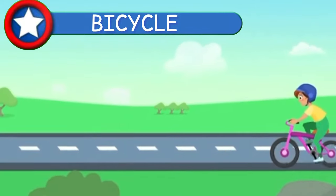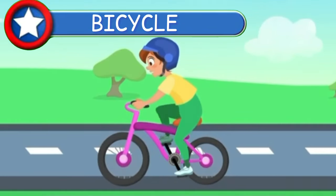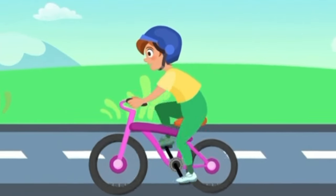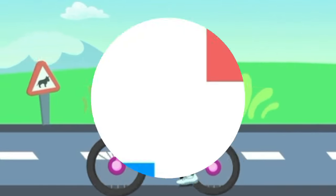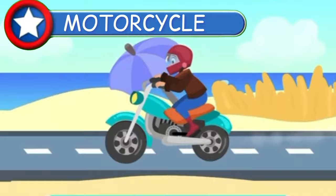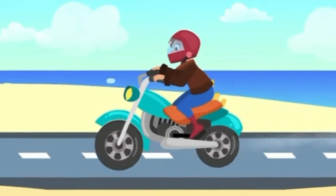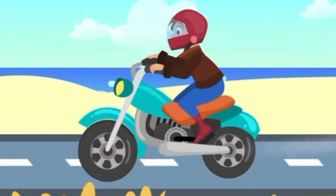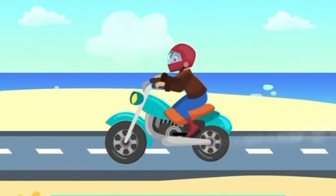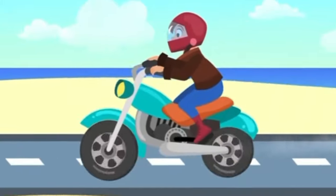Here is a bicycle. It has two wheels and we can move it by using these pedals. Here is the motorcycle. It also has two wheels, but they are powered by a motor. A motorbike will whiz you around the city much faster than a bicycle.